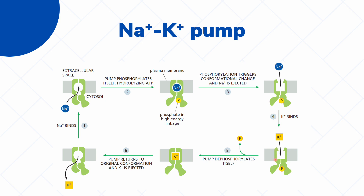In order to move potassium back into the cell, the protein has to dephosphorylate itself — that is, remove the phosphate group. In doing so, it changes back into its original shape and ejects the potassium back into the cell. After this, the protein is ready for another sodium ion to bind to it, and the cycle repeats itself.